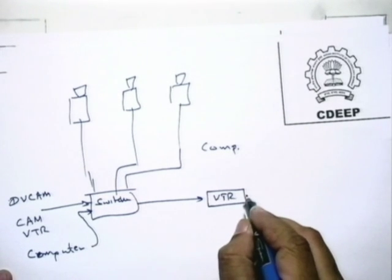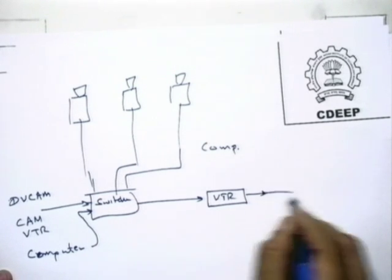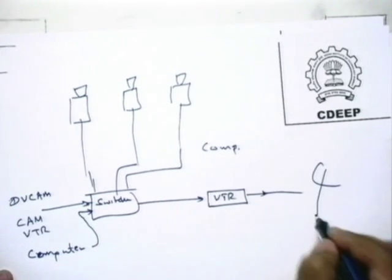Everything is recorded at the same time. When there is a live telecast, the signal is fed to the ISRO telecasting network, which then broadcasts to the VLCs. Our job is to shoot, do online or offline editing, and feed it to the ISRO network. For audio, we have 7 or 8 microphones, and that audio goes to an audio mixer.